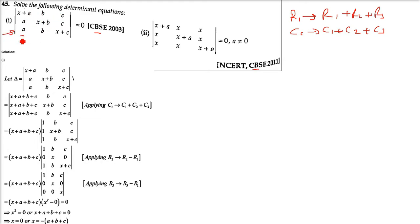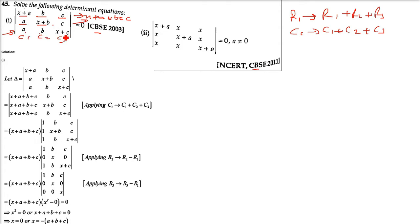Now if you see here, if we add Row 1 plus Row 2 plus Row 3, it won't solve our purpose — it will be A, 3A, X, 3B, and X, 3C. That will not solve our problem. So what we are going to do here is add the columns. Column 1 plus Column 2 plus Column 3: X+A+B+C, A+X+B+C, and A+B+X+C all equal X+A+B+C. So X+A+B+C will be common in the first column — I am taking it outside.